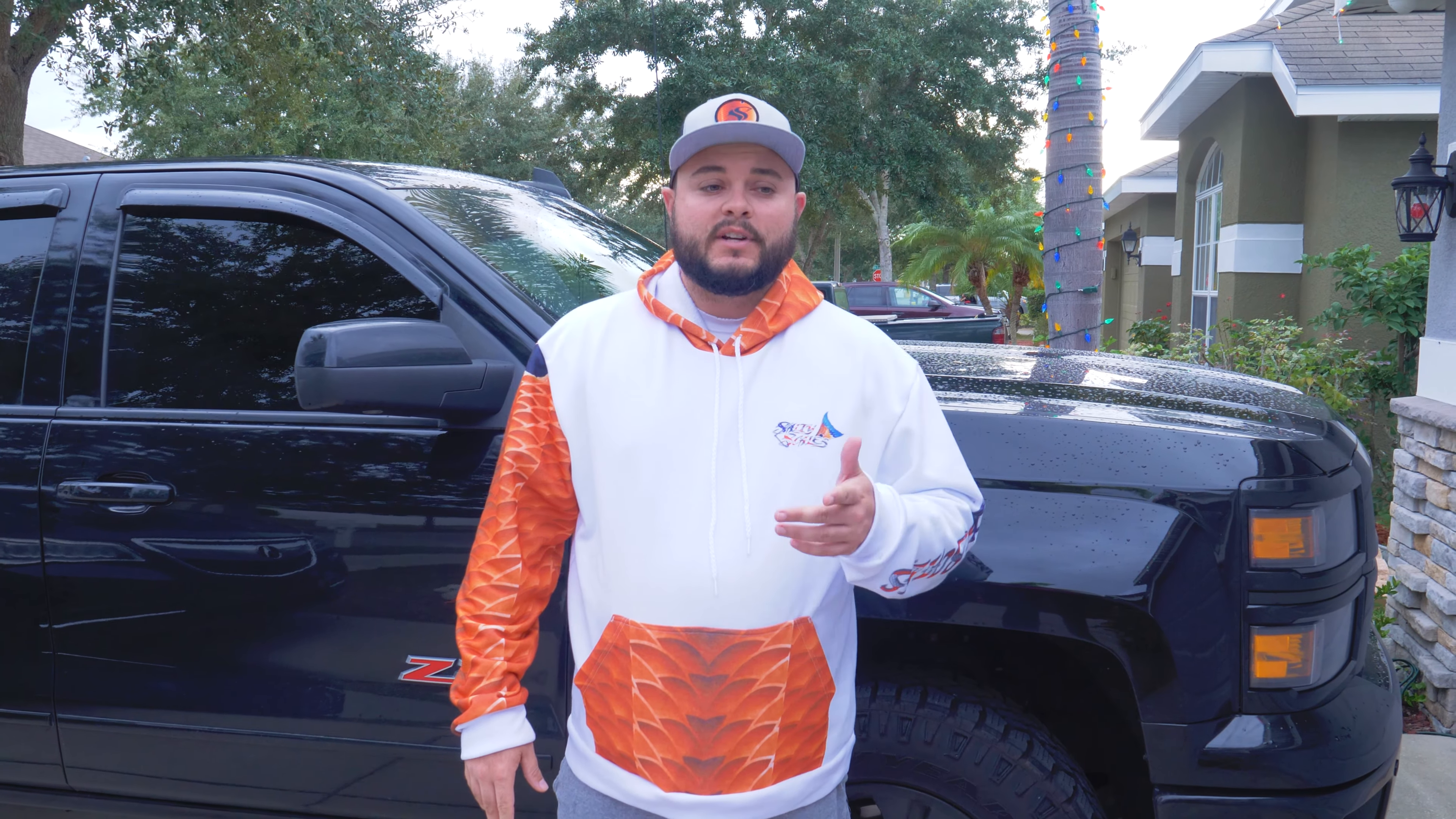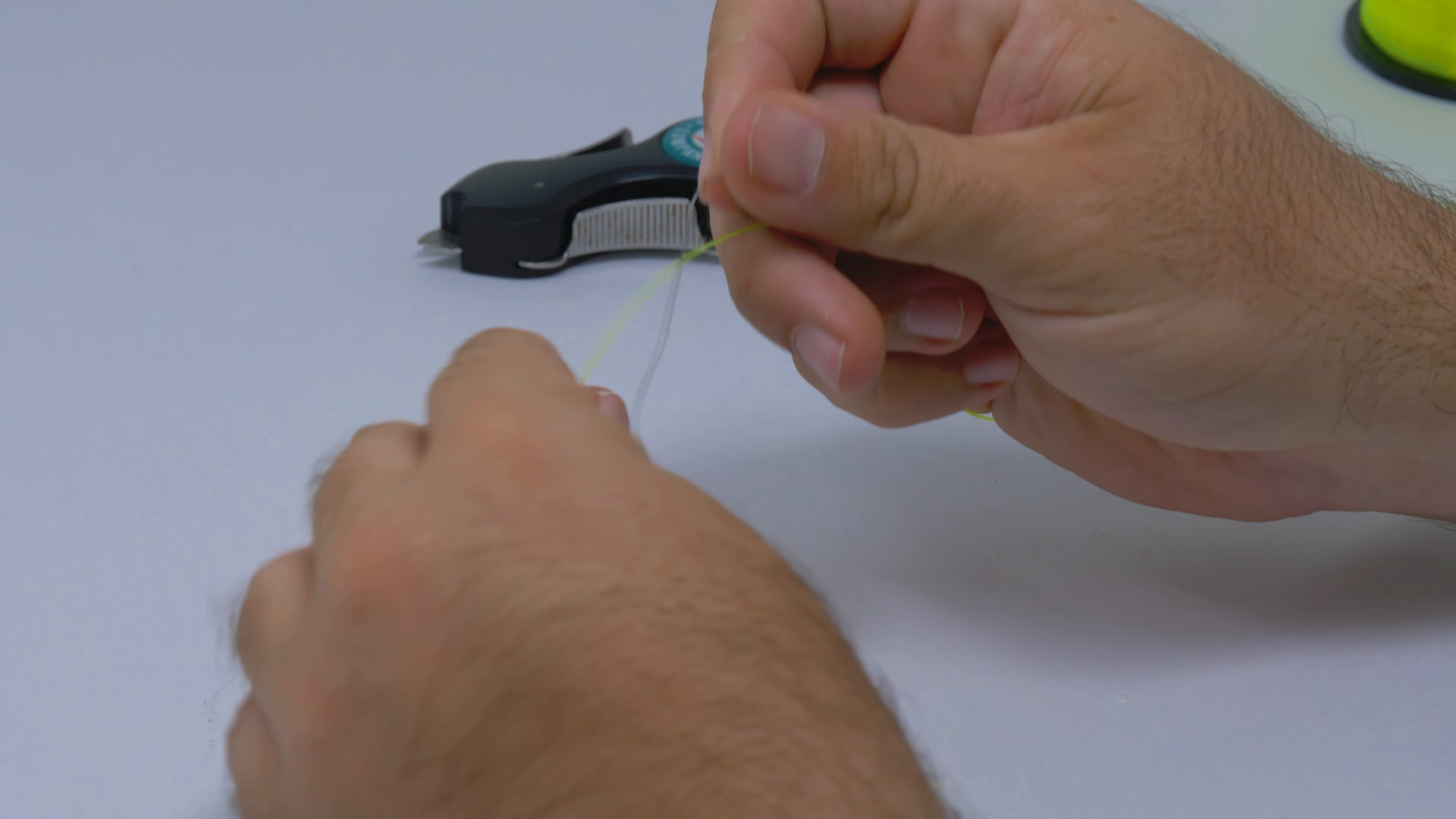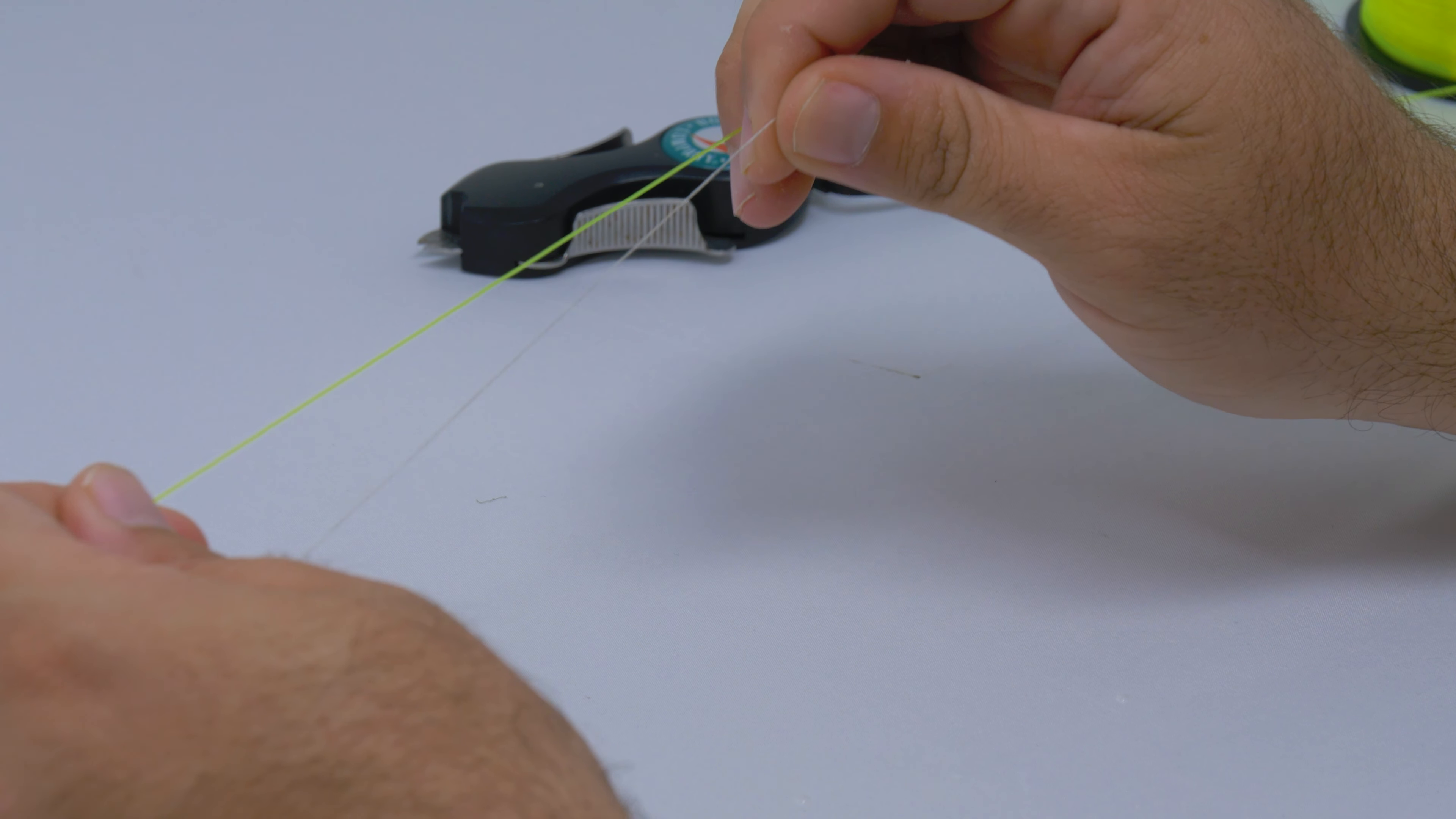Today I'm going to demonstrate how to tie this knot in under a minute. With a little practice you can get really good at it. So let's jump in. The uni-to-uni knot is a very powerful knot, perfect for joining your braid to your monofilament or fluorocarbon leader. First step is to run your leader and your mainline parallel to one another.